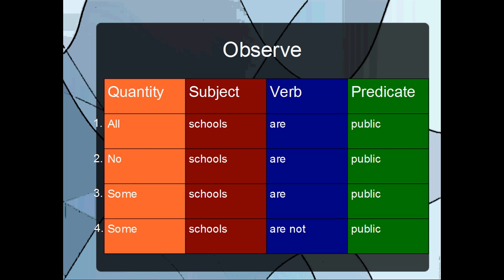For the second proposition, no schools are public. It's entirely excluding the category schools from the category public. It's saying there's not a single school which falls under the category public. Because it is excluding the category schools from the category public, that second proposition has a negative quality.